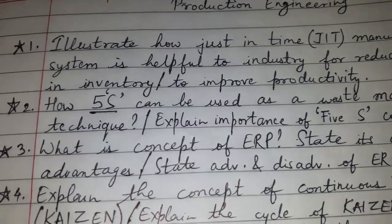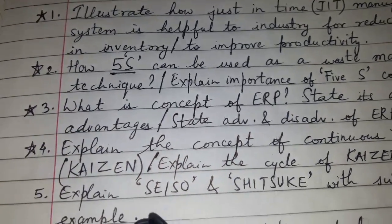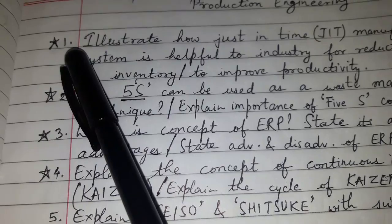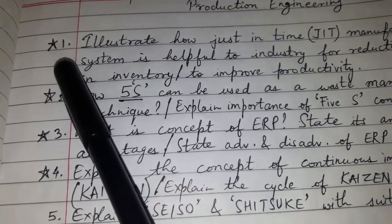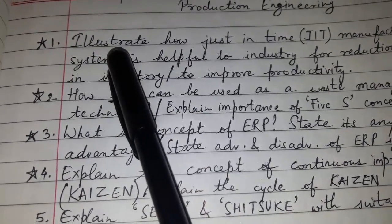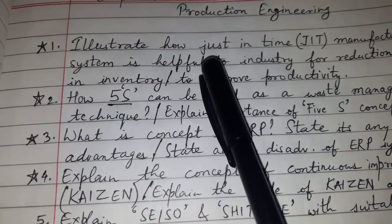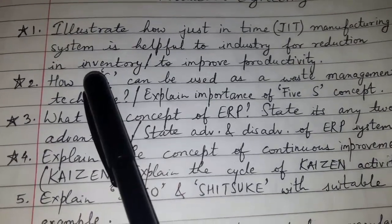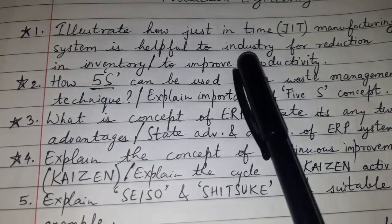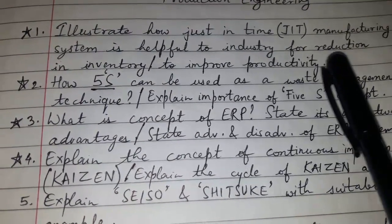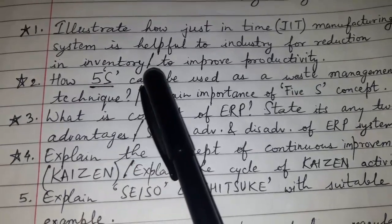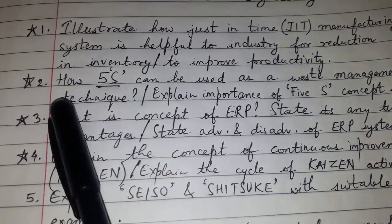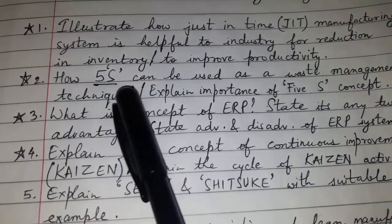All the questions are important, but those marked with a star are more likely exam questions. Question number one: illustrate how Just-in-Time (JIT) manufacturing system is useful to industry for reduction in inventory or to improve productivity.